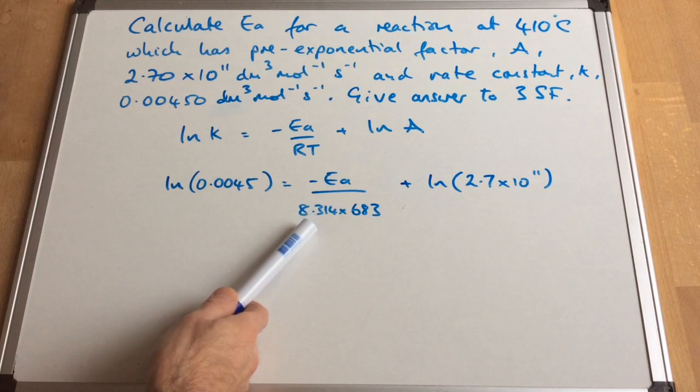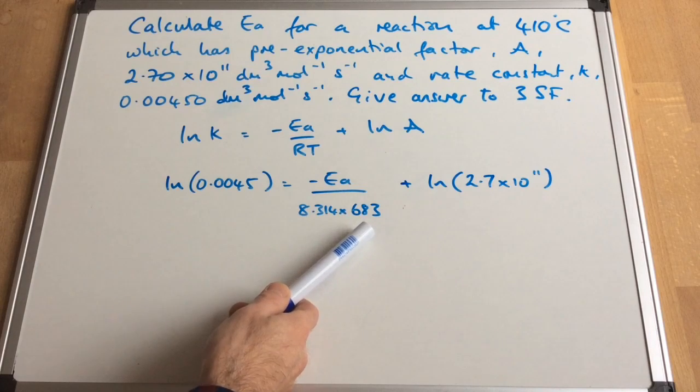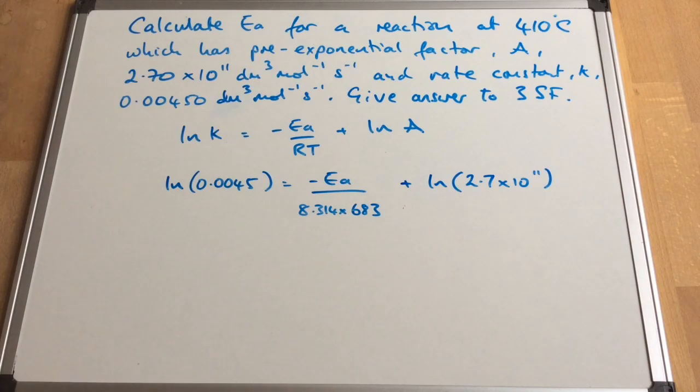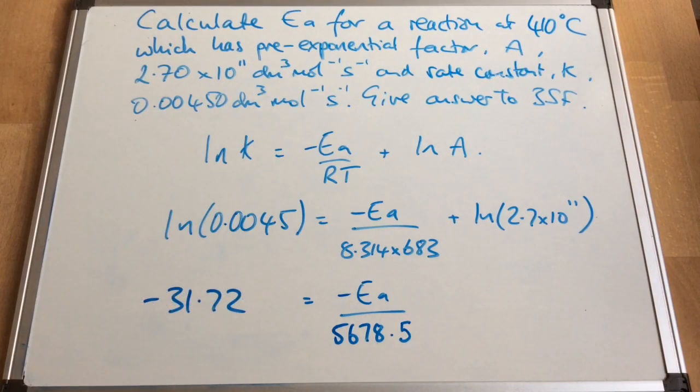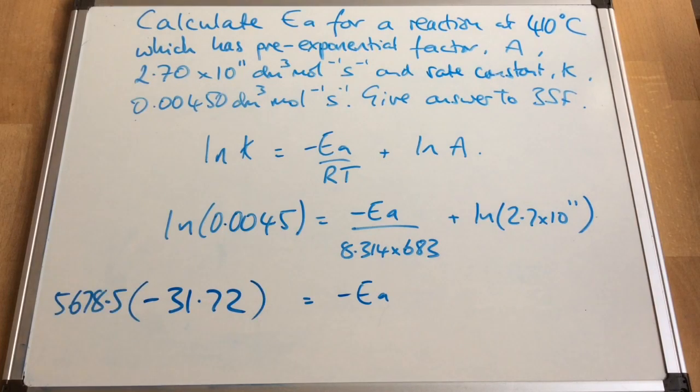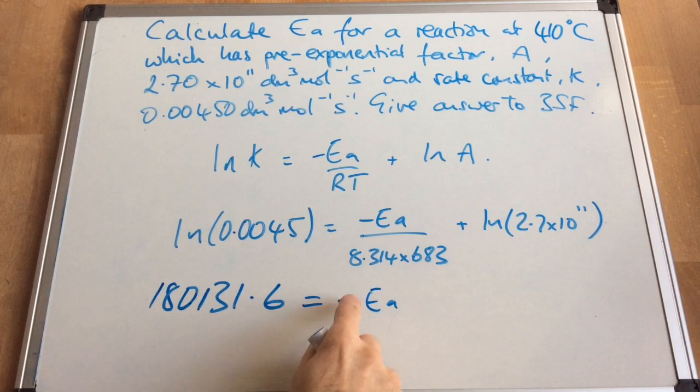And because we've got Kelvin temperature within these units, we must express the temperature as Kelvin as well. And so that 410 degrees C, when we add 273K onto that, we get that 683. Taking the 26.32 over to the other side gives us that, which comes out at minus 31.72. Taking that 5678.5 over to the other side gives us that number there. Now you can see we've got minus signs on both sides, so we can effectively cancel those out.